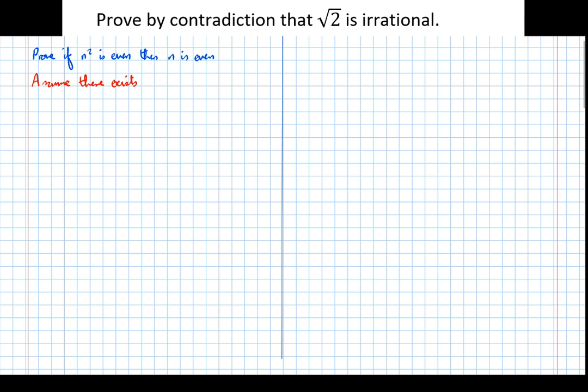So we're going to assume there exists an odd integer n which can be written in the form 2m plus 1 such that n squared is even. So that's our false assumption.